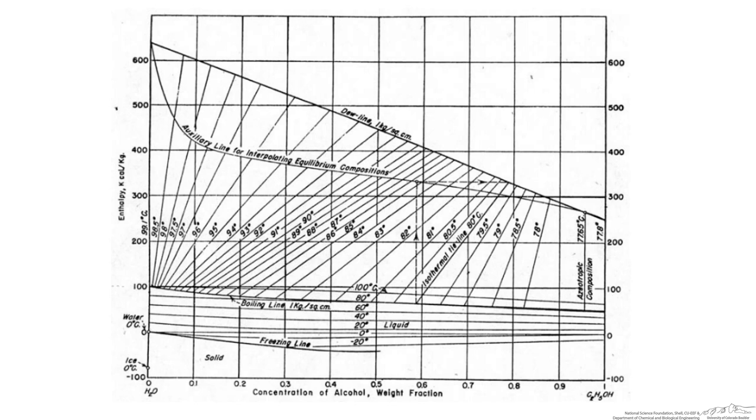So you can see with any kind of binary system phase diagram we have our concentration of the alcohol in weight fraction. It is important to notice that 100% ethanol is on the right side and 0% ethanol or 100% water is on the left side.